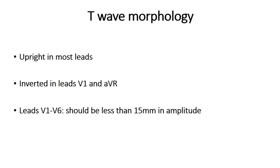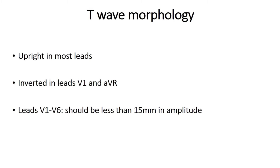The T wave tends to be upright in most leads except V1 and AVR. In terms of its size, when you look at it in leads V1 to V6, it should be less than 15 millimeters in amplitude.